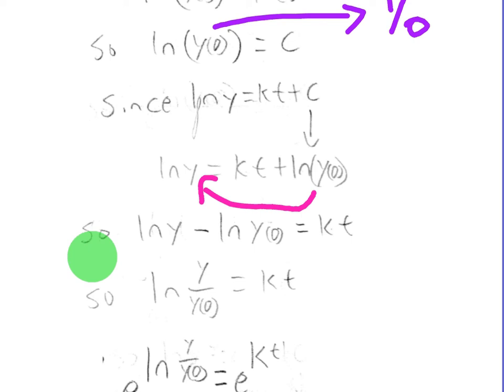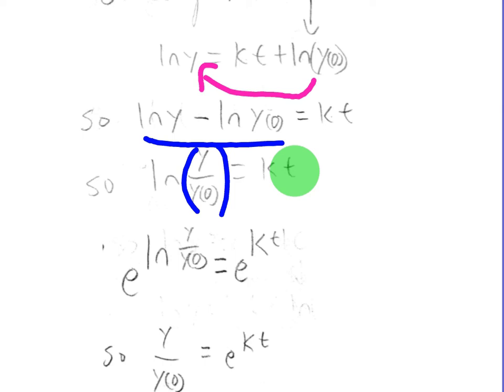Remember that you can combine two logarithms whenever you subtract them. You can actually divide them and put them inside a parenthesis. So this is going to become natural log of y/y naught equals kt. I should have really changed that to y naught, but it's just the initial y value.